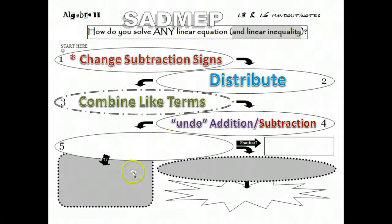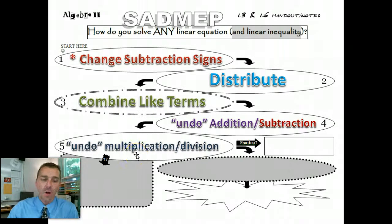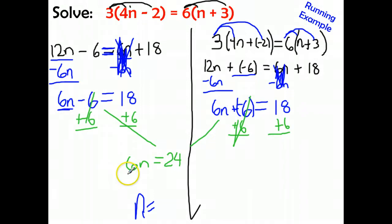Step number 5 is this: You now need to undo the multiplication or division. So I would simply undo this multiplication here of 6 by dividing by 6. When I divide by 6, I've got to do it to both sides because it's an equation. So I then have 24 divided by 6, which gives me n by itself. Finally, we've got n by itself. We've isolated using SADMEP. And we've got n equals 4.